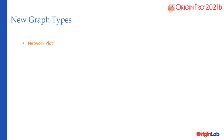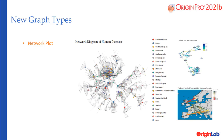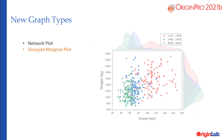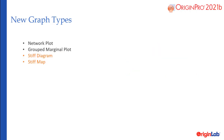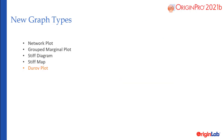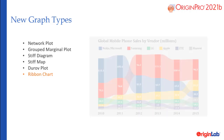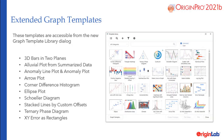New graph types in this version include network plots, grouped marginal plots, stiff diagrams, durov plots, and ribbon charts. 2021b also includes a set of extended graph templates, accessible from the new graph template library dialog.